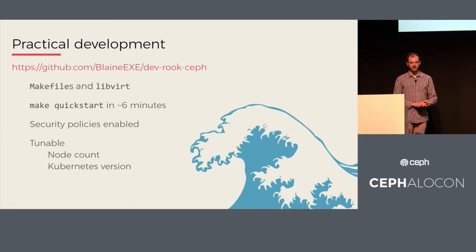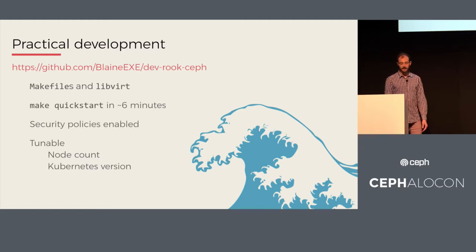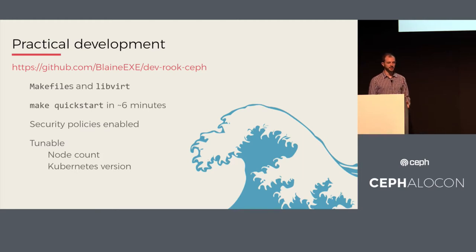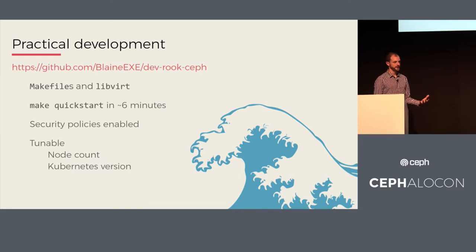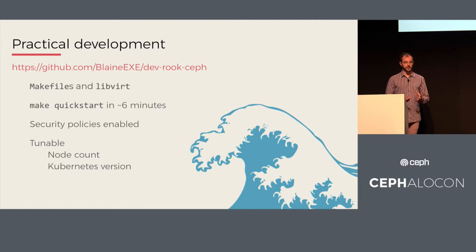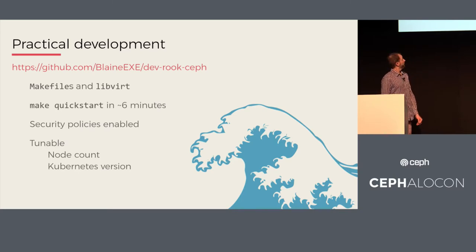For practical development, I spent the past few weeks upstreaming the development environment I've been using for about a year. You can find it at this repository — I've called it dev-rook-ceph. It's primarily based around makefiles for user operation and libvirt for virtualization of the cluster. There's a make quickstart target which, on my laptop, gets a three-node cluster going with Kubernetes ready for Rook in about six minutes. It also has security policies enabled within Kubernetes, to run an environment closer to what users in production are using. It's also tunable — common things like node count or Kubernetes version.